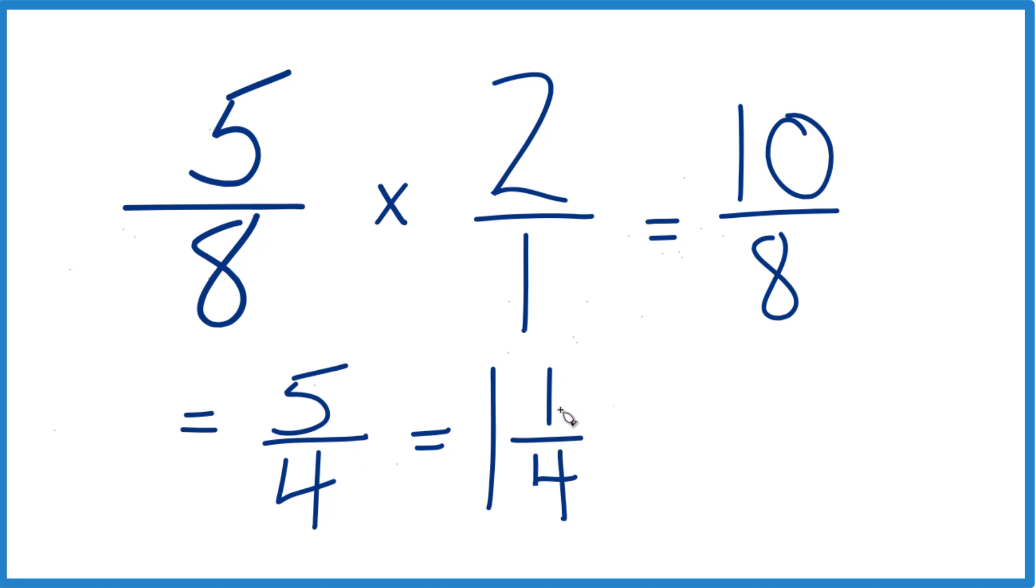These are equivalent. Same value. Let's check that. 1 times 4 is 4. 4 plus 1, that equals 5. Bring that 4 across. So that's what we had before. That's it.